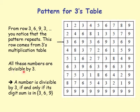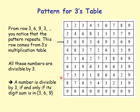All these numbers are divisible by 3 because the digit sums came from numbers which were multiples of 3. A number is divisible by 3 if and only if its digit sum is in the set {3, 6, 9}.